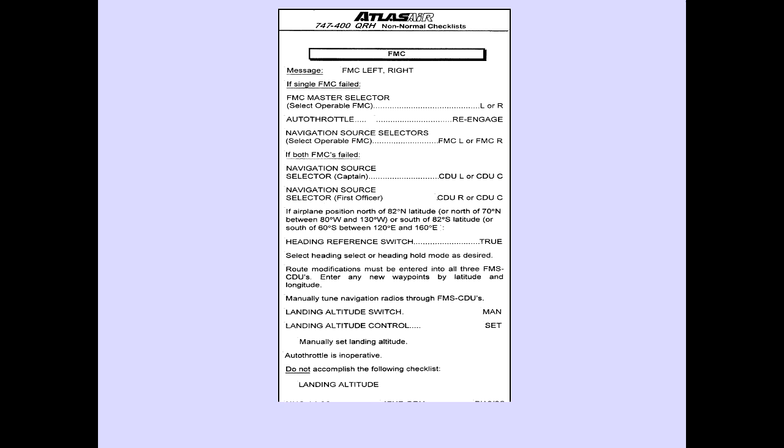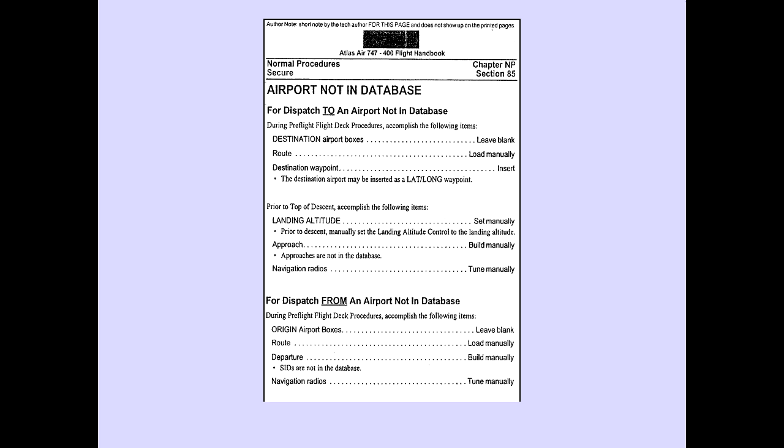Prior to the top of descent, place the landing altitude switch to manual, place the landing altitude control to set, and manually set landing altitude. This slide outlines the procedure for dispatch to or from an airport which is not listed in the FMC database.